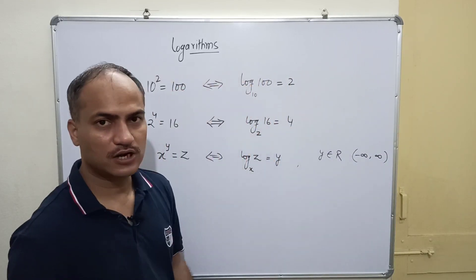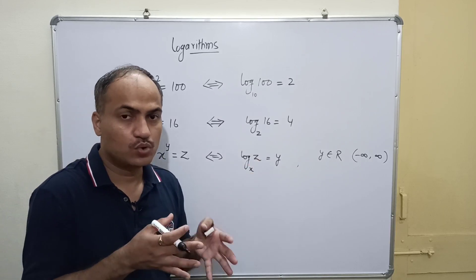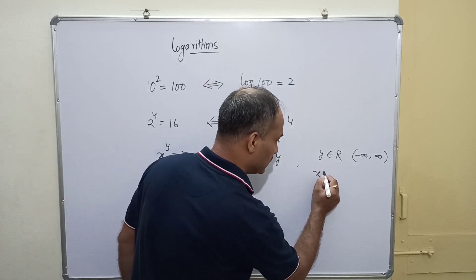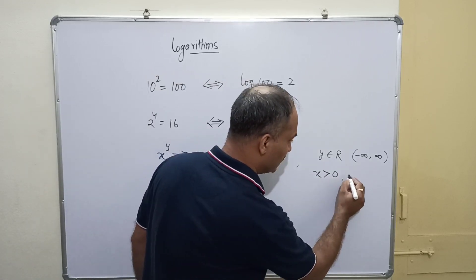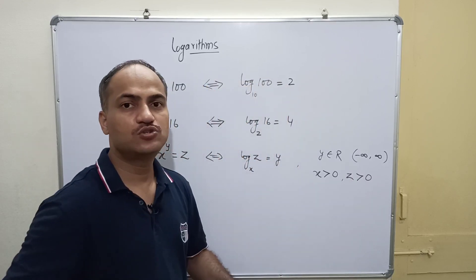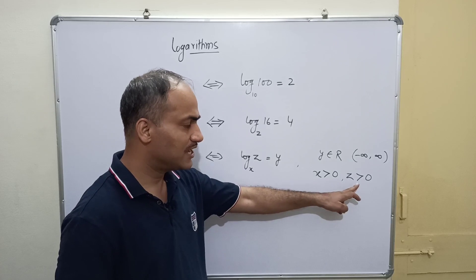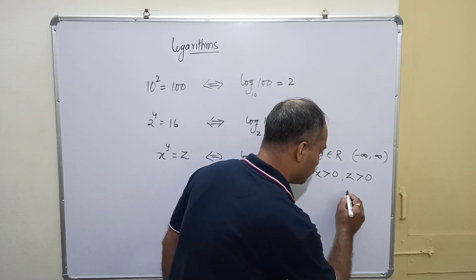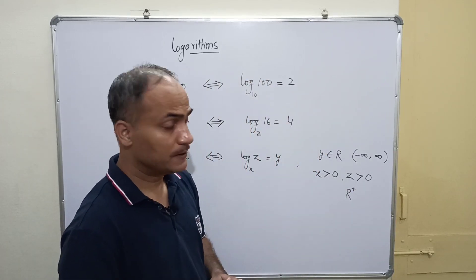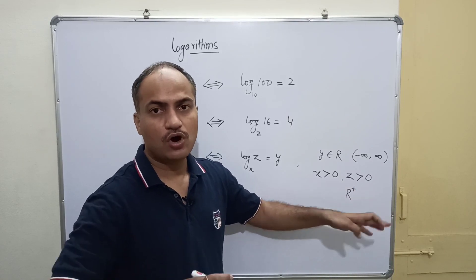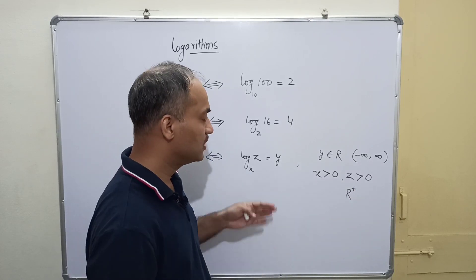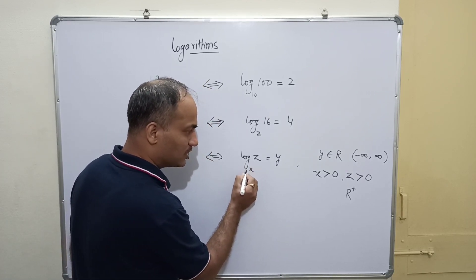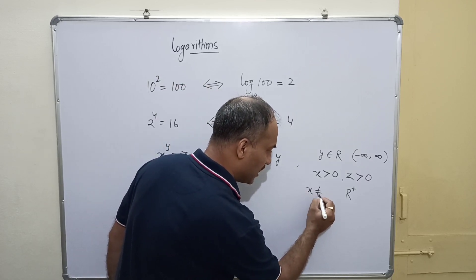However, x and z have more restrictions. x must be greater than zero and z must also be greater than zero — both must belong to the positive real numbers. They can never be zero or negative. If that happens, the logarithm is simply not defined.